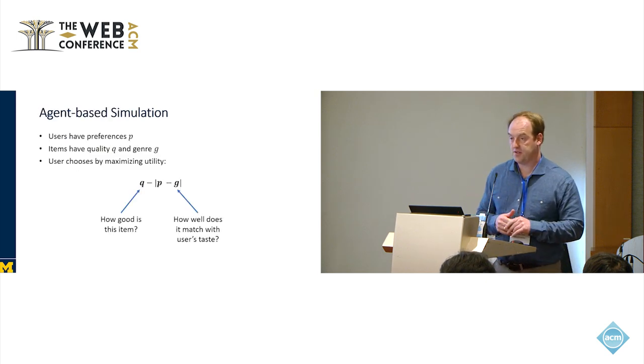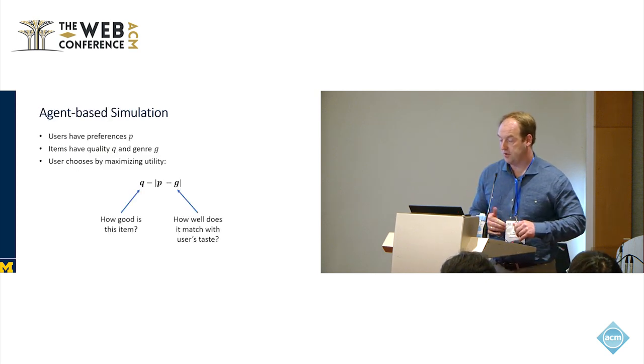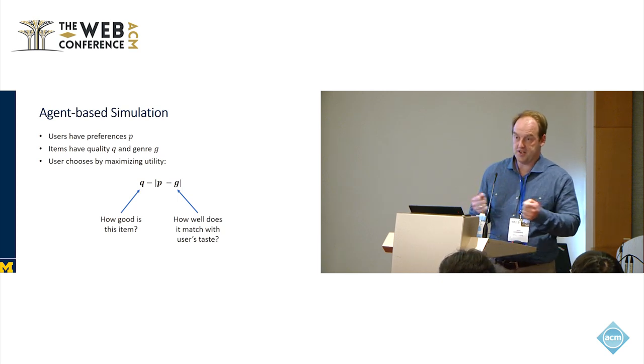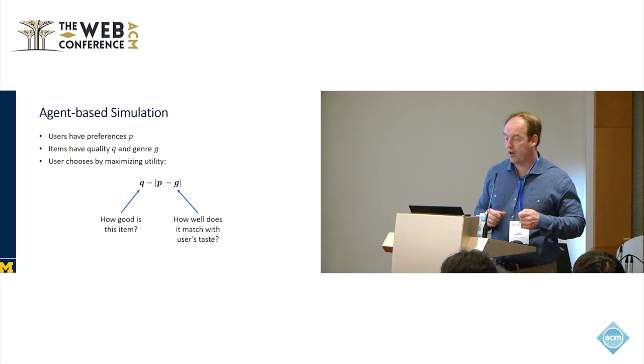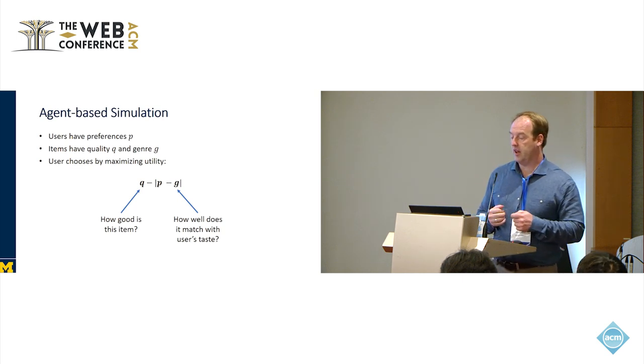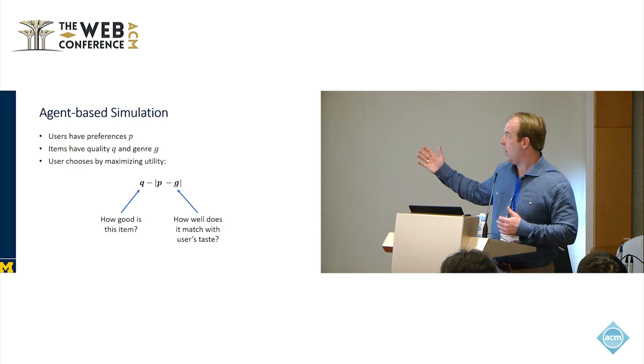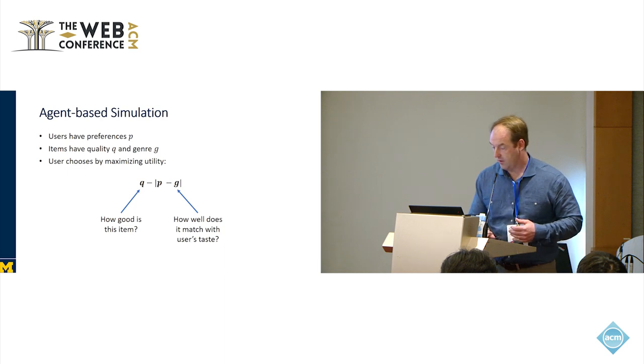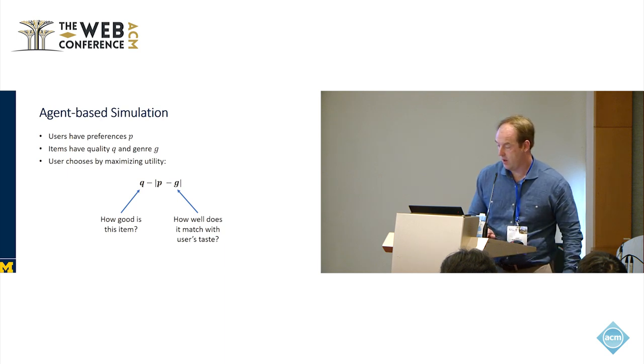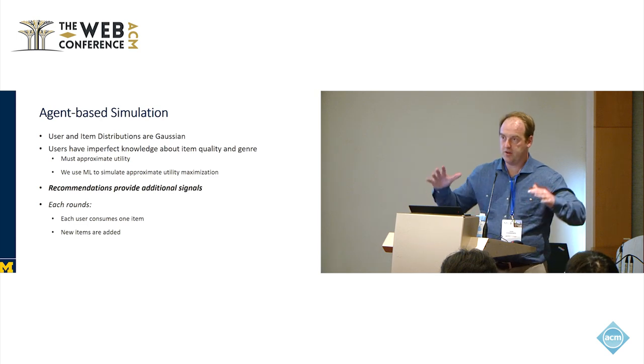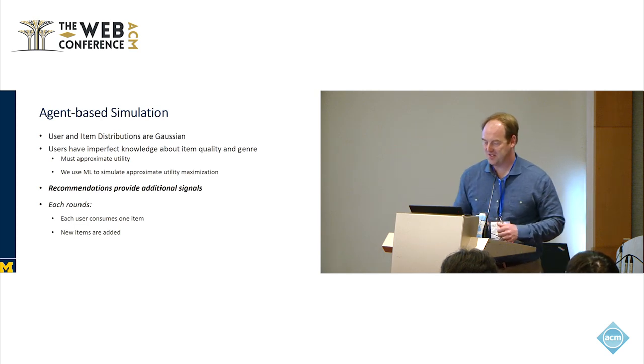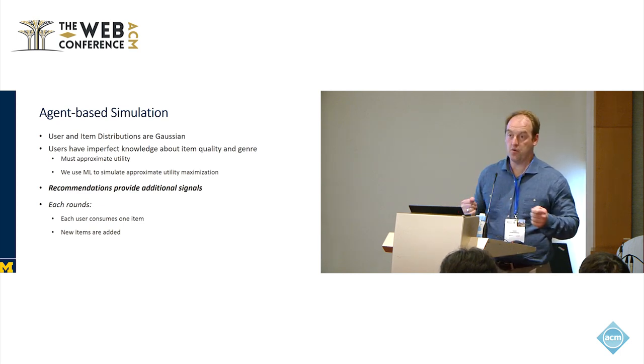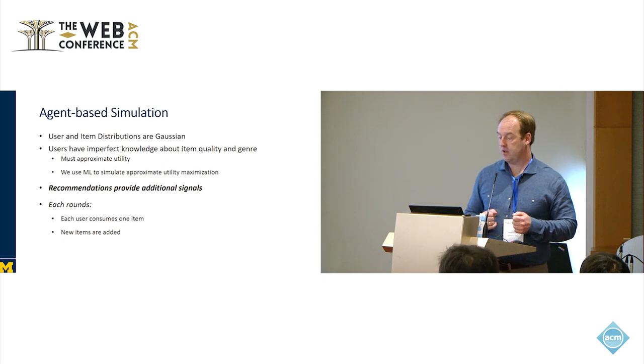Now we want to study these effects through agent-based simulation. Users each have a preference P, which is a real number. Items also have a genre G, which is a real number on the same scale as user preferences, but they also have a quality. Users would like to choose items that have high quality but also match their taste. The user and item distributions are going to be Gaussians. But users have imperfect knowledge, a noisy signal about the item quality and the genre.